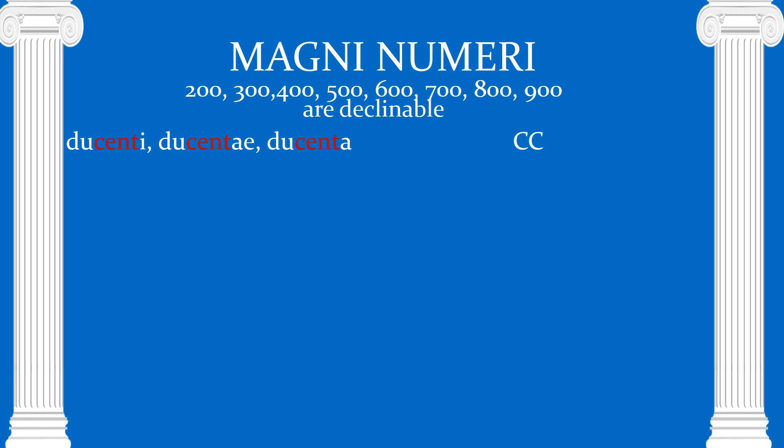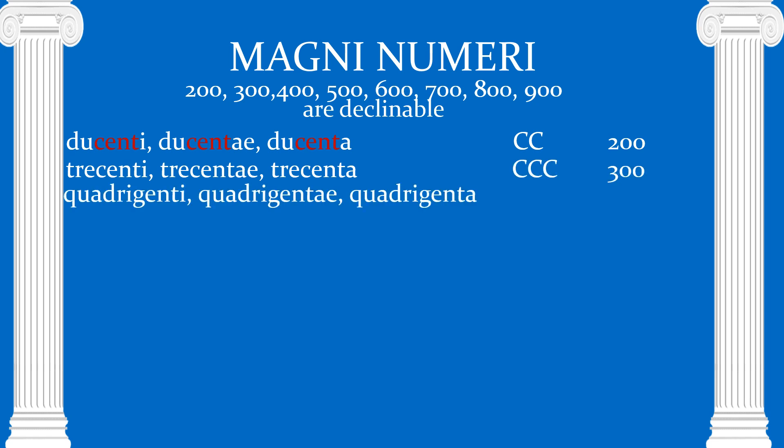Trecenti — the tre should tell you that you're looking at a three, and it looks like our English three. The -centi makes it a hundred, so we have three hundred. Quadringenti is four hundred — note the four C's in Roman numerals.